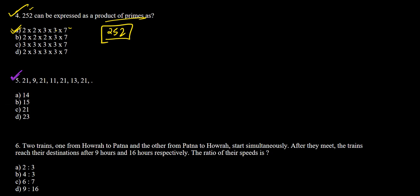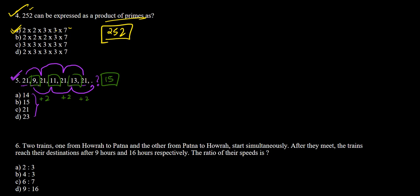Question 5 presents a number series where we must find the missing element. Every alternate number is 21. Ignoring those, we are left with 9, 11, 13 — each increasing by 2. So 13 + 2 = 15 is the next element. The answer is 15, which is option B.